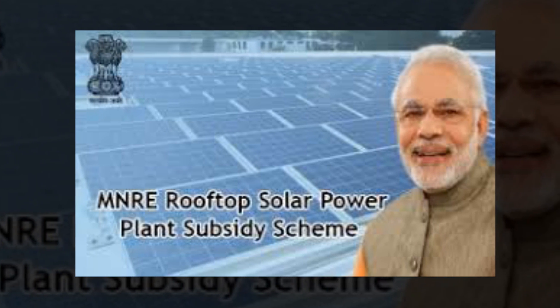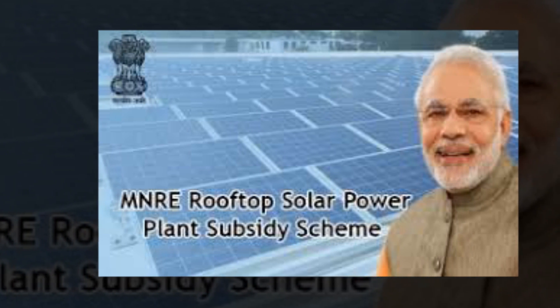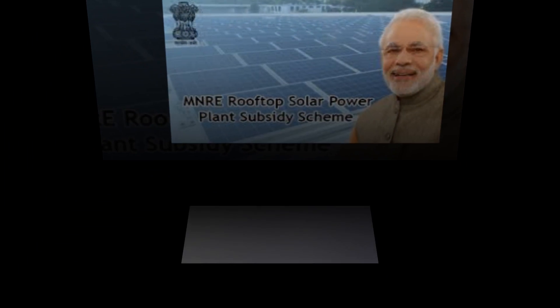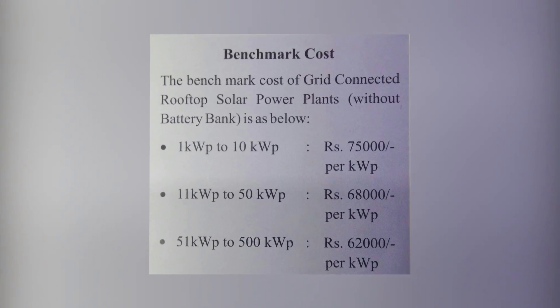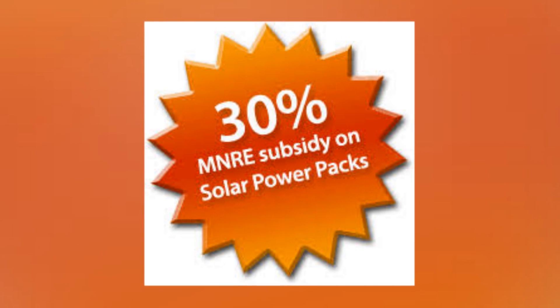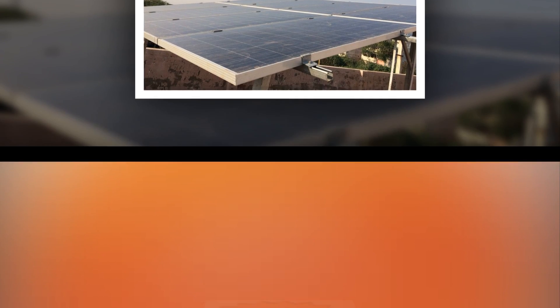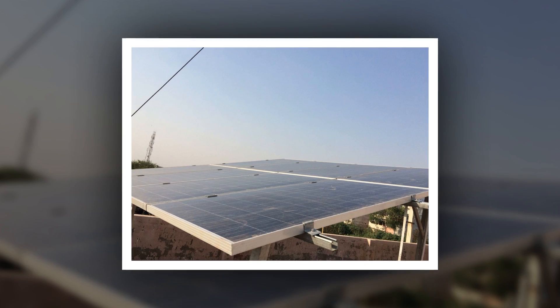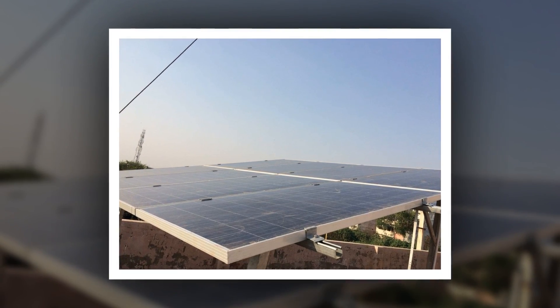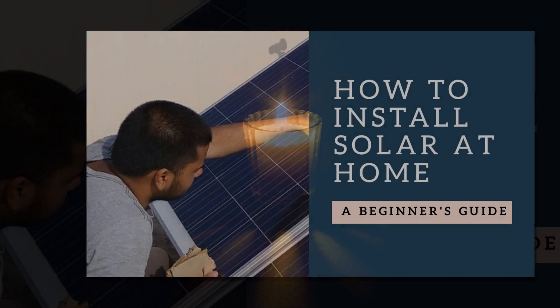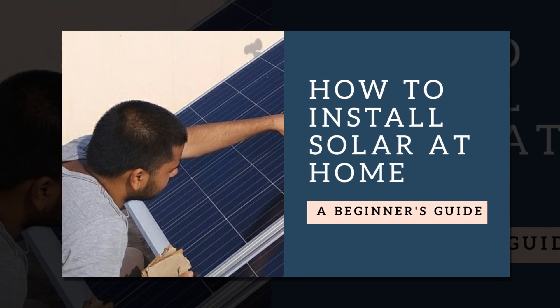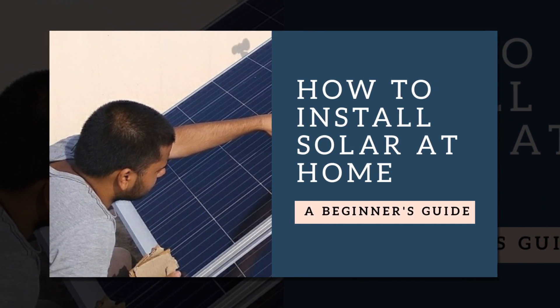Under the Schemes for Grid Connected Rooftop Solar Power Plants, the Central Financial Assistance (CFA) is 30% of the benchmark cost for general states, and 70% CFA for Northeastern and special category states, for residential, social and institutional users. It may be noted that there is no subsidy for the commercial and industrial sector, though 40% ADT and provision of net metering is still on the cards for industries.